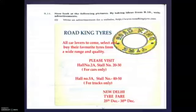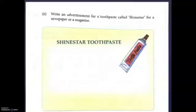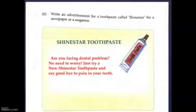The second B11 task is to write an advertisement for a toothpaste called 'Shine Star' for a newspaper or magazine. Write: 'Shine Star Toothpaste — are you facing dental problems? No need to worry! Just try the new Shine Star Toothpaste and say goodbye to pain in your teeth.' So one advertisement is for the internet and the other is for the newspaper or magazine.